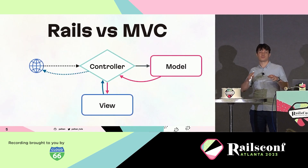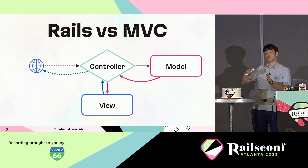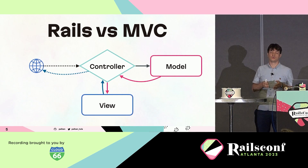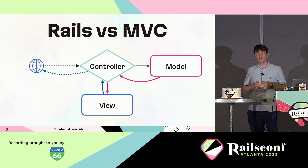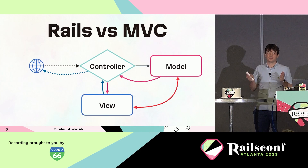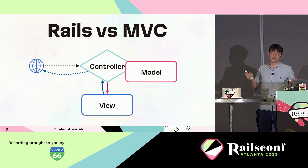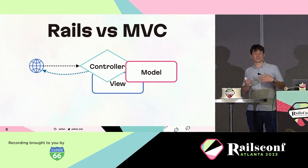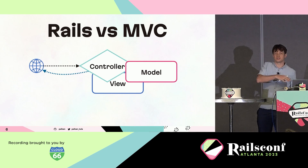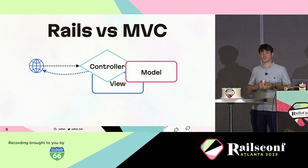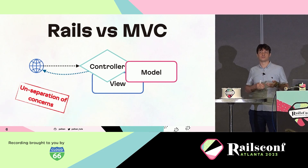MVC is the idea of separating application components into three groups by their responsibility. Model is responsible for managing state and business logic. View is responsible only for the user interface. Controller is responsible for translating user input into model updates. In Rails, however, we can easily diverge from this diagram — introducing direct dependencies between model and view, or making controllers responsible for business logic, or making models generate UI data. Instead of separation of concerns, Rails applications tend toward unseparation of concerns.